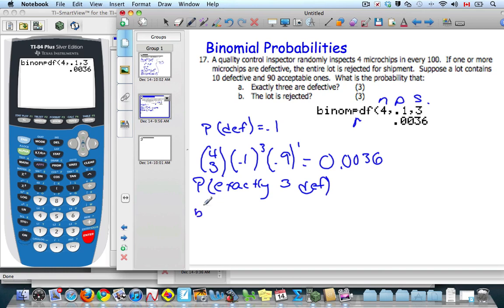The second scenario refers to the lot being rejected. It says if one or more of the microchips are defective, then it'll be thrown away. I know I have the probability of 0, or I could have one microchip defective, or two, or three, or four defective. These are all the possibilities. They are mutually exclusive events, and those probabilities add up to one.